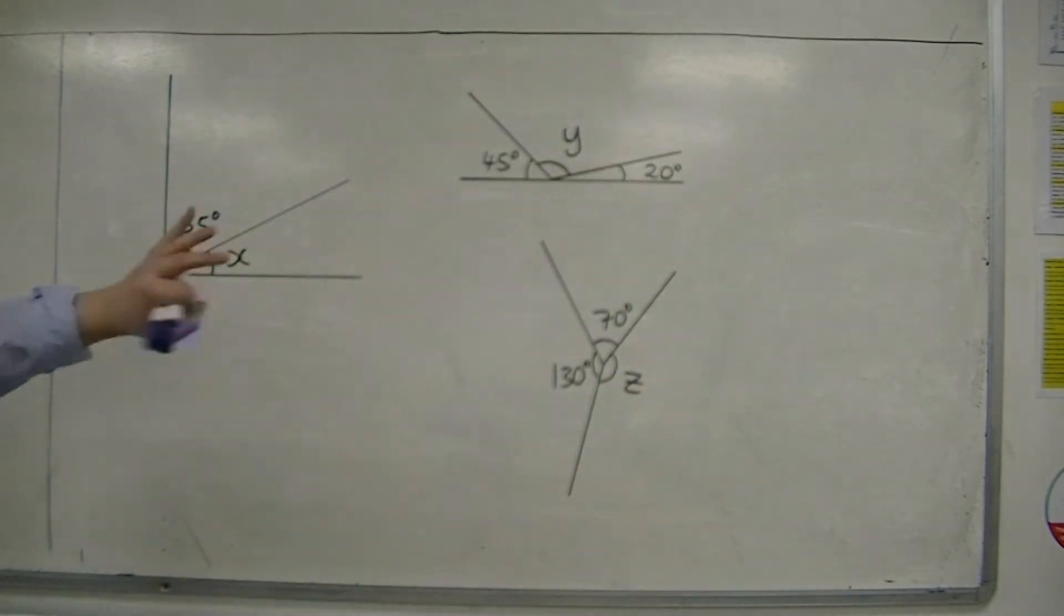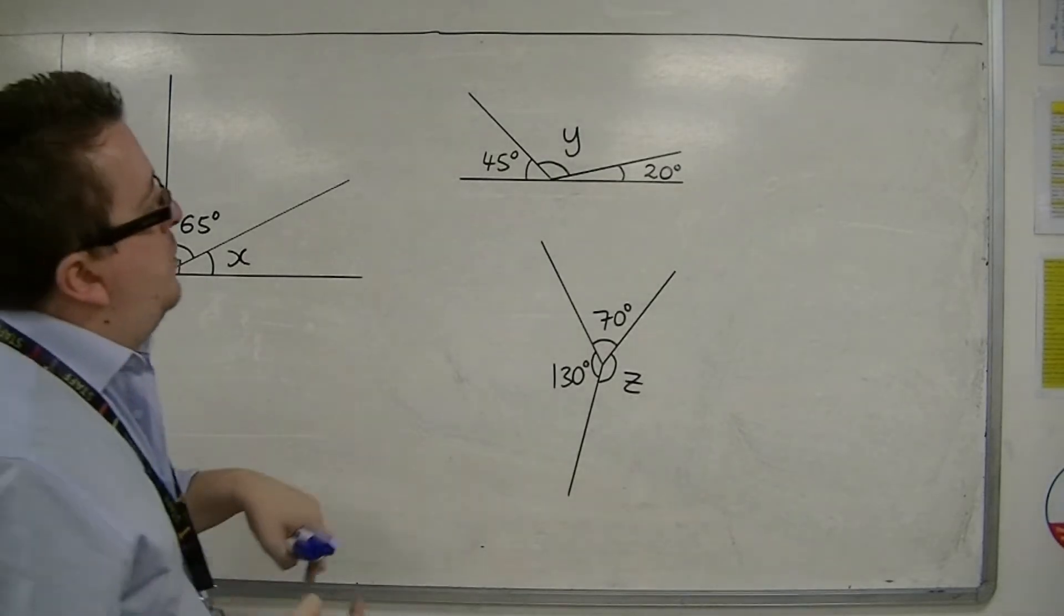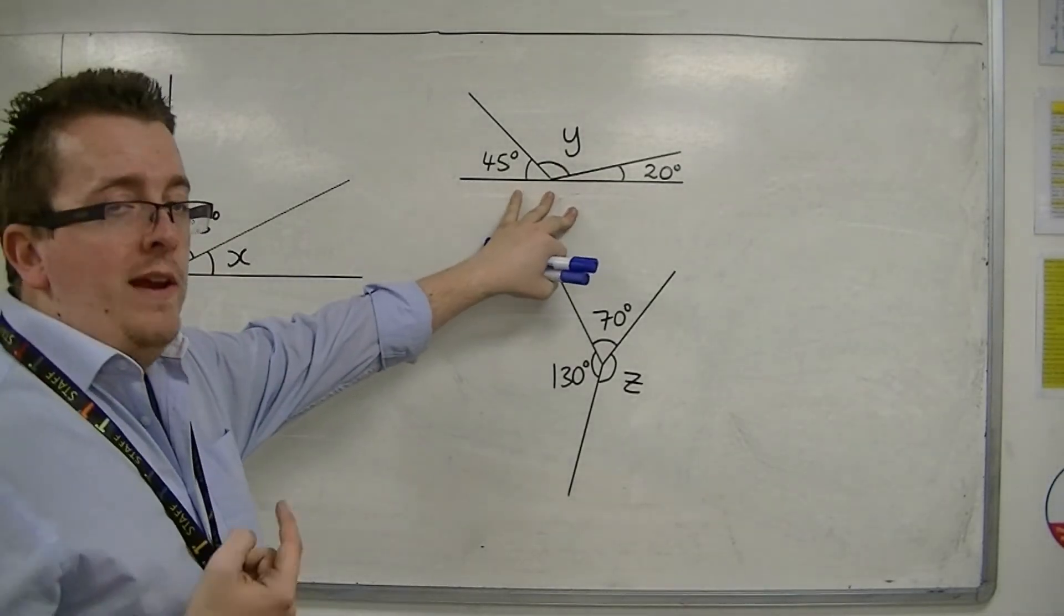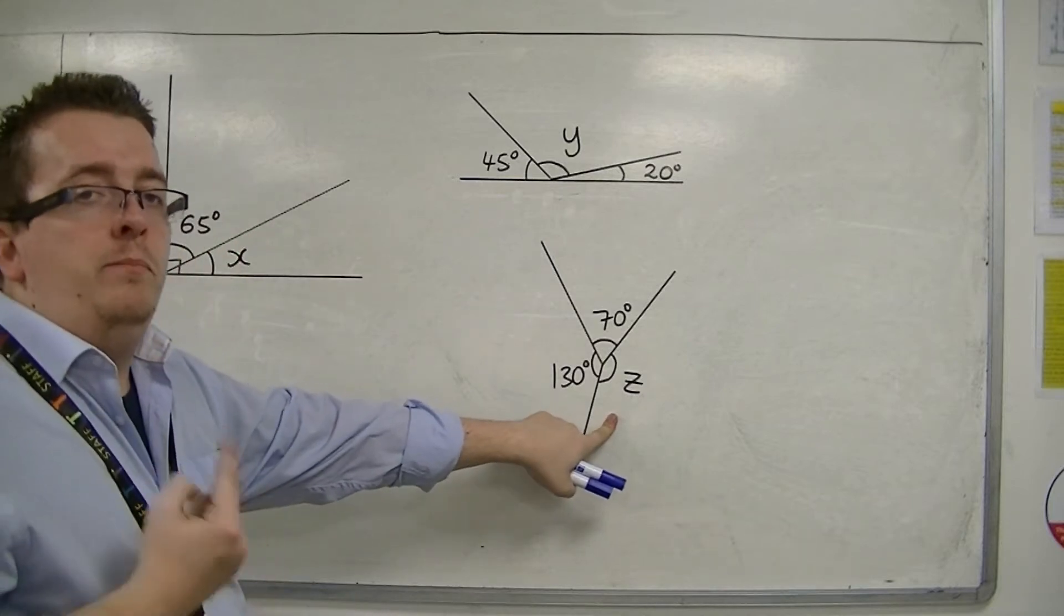So we have problems where we have angles in a right angle, we've got problems where we've got angles on a straight line, and we've got problems where we've got angles at a point.